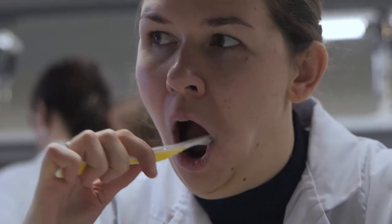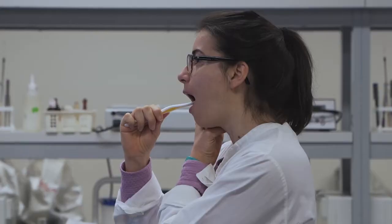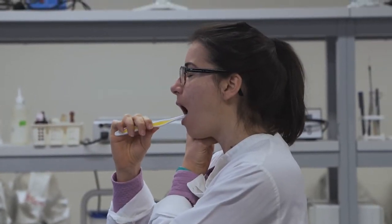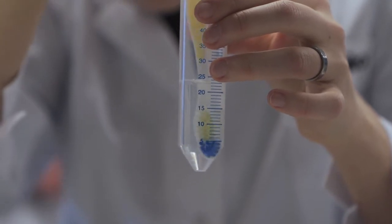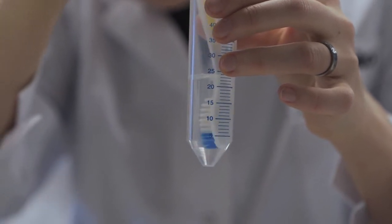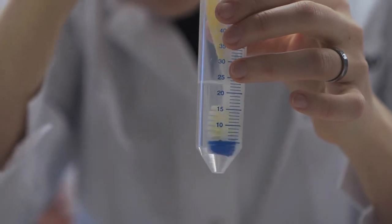Now take the other toothbrush and again make at least 10 circles on the same surface on the right and then on the left cheek. Put that second toothbrush with its head inside a 50 milliliter tube with 15 or 20 milliliters buccal cell buffer.